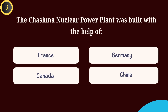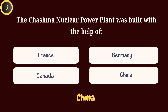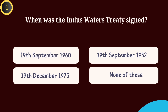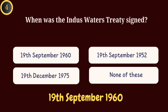Question 3: The Chashma Nuclear Power Plant was built with the help of — Answer: China. Question 4: When was the Indus Waters Treaty signed? Answer: 19th September 1960.